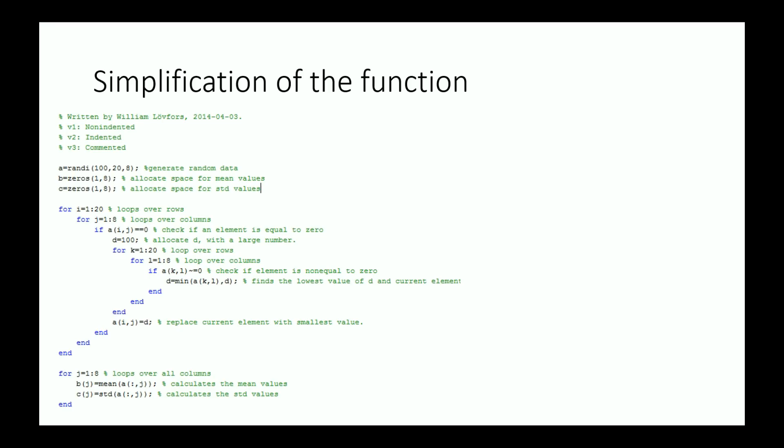Okay, so let's continue and talk about how to simplify functions. So here's the full example again. This code can actually be simplified quite a lot. And I will go through this simplification step by step. So first look at these lines. What they do is that they find the lowest value in the data that is not equal to zero. And it does this by creating first a variable d that is a large number. And then compares d to all elements in the matrix.